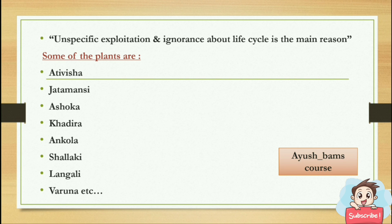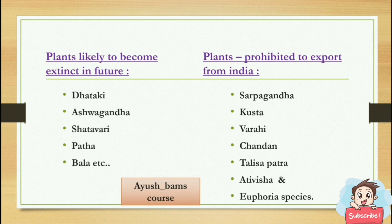Some of the currently endangered plants are Ativisha, Jatamansi, Ashoka, Khadira, Ancola, Shallaki, Varuna, etc. Plants likely to become extinct in future are Bhataki, Ashwagandha, Shatavari, Pata, etc.